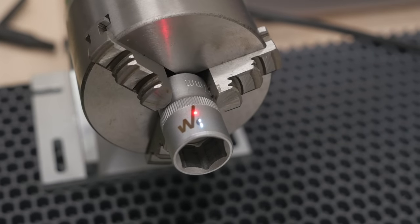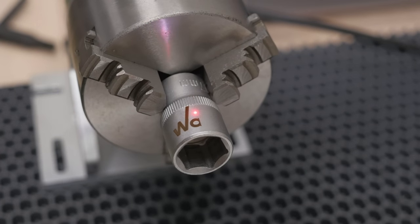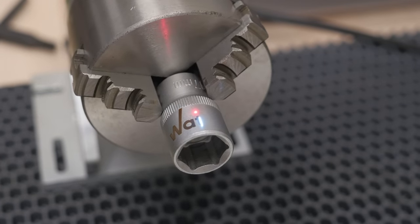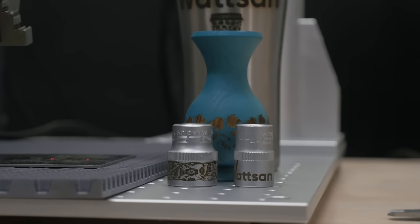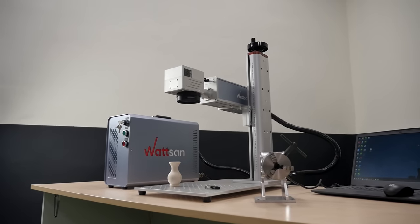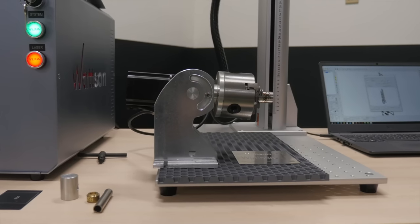The main advantage of the rotary device is that it extends the capabilities of the laser marker. The rotary device allows marking on cylindrical products and provides uniform distribution of marking over the entire surface.